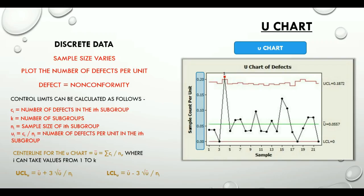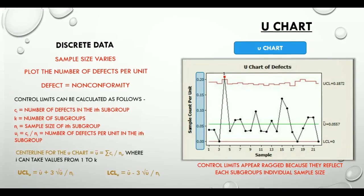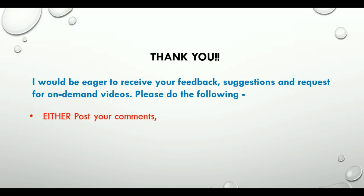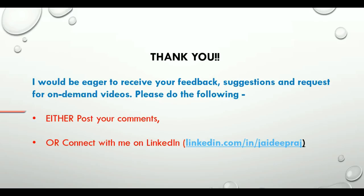An important point to note is that in a U chart, control limits appear ragged because they reflect each subgroup's individual sample size — similar to the P chart for proportion defectives. This completes our discussion on control charts for discrete data. Please feel free to share your suggestions and get back to me with any queries. You can connect with me on LinkedIn as well. Please subscribe to this channel to stay updated on new topics. Thank you so much for your time today. Bye-bye.